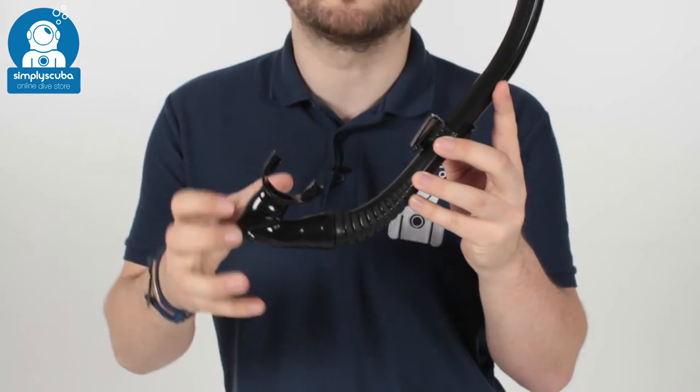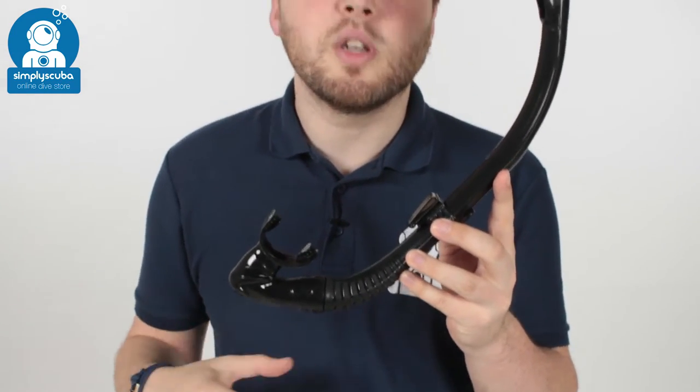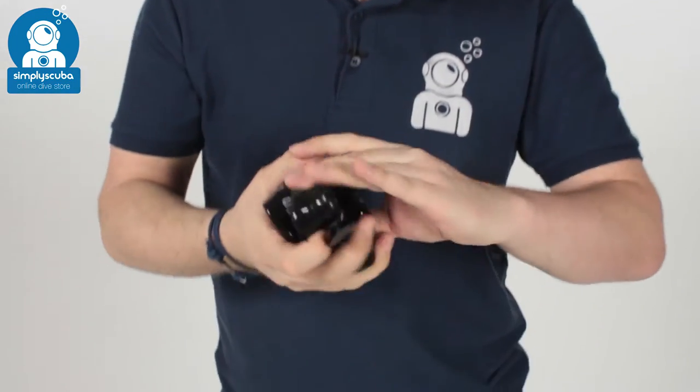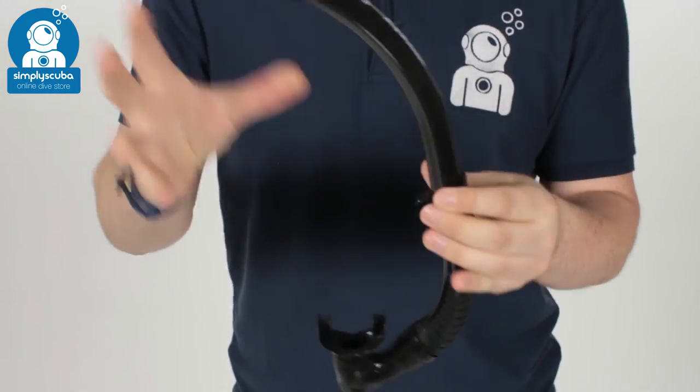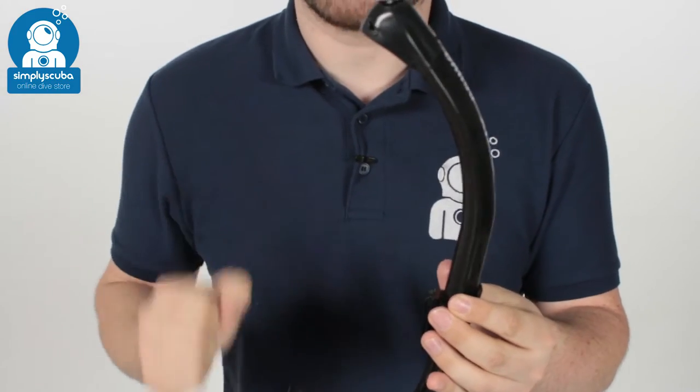This is a completely flexible single valve snorkel, very handy. If you don't want to have it constantly on your mask, you can just roll this up. Every part of it is completely flexible. You can roll it up into a really tight little ball, just stow it in a pocket, and then when you need it, it just springs into its natural shape.